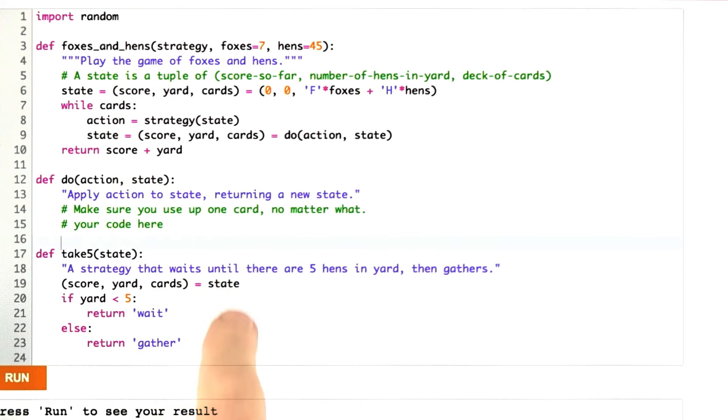Now this is a partnership, so I've written some and I'm going to call on you to write some. Here's a top-level function. We call it foxes and hens. It takes a strategy of a single-player strategy, and it takes the number of cards of each type in the deck. Here we have a 52-card deck of which there are 7 foxes. It creates that deck as a string of f and h's, and the initial state then is the cards is a string of 52 characters, the score is 0, and the number of chickens in the yard is 0.